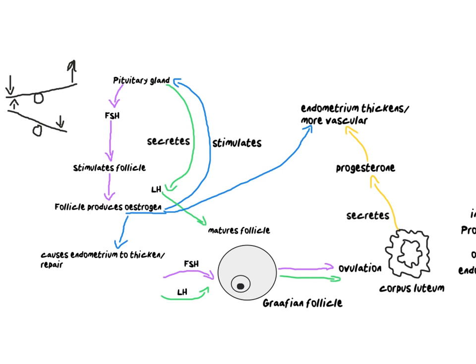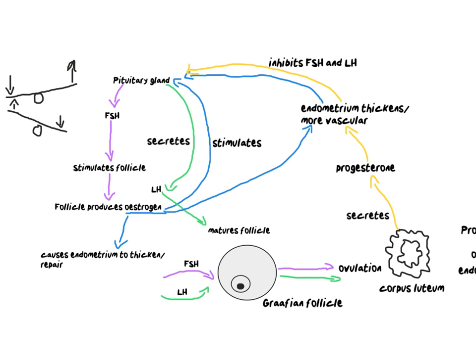Because of this seesawing effect, estrogen and progesterone come back around to the pituitary gland, and what that does is tell the pituitary: we have a very thick endometrium, we are ready for pregnancy — don't make another follicle. We have to stop the production of FSH. So these two hormones — estrogen and progesterone — inhibit FSH and LH, represented by the blue and yellow lines inhibiting the pituitary gland from secreting FSH and LH.